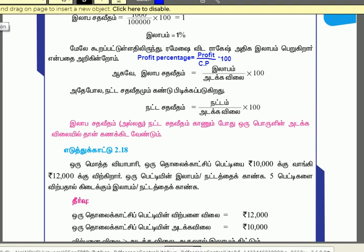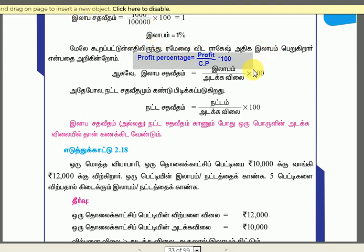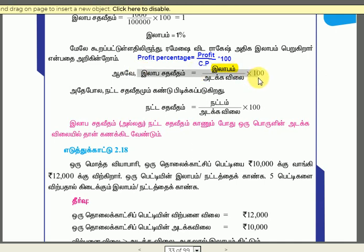Let's talk about profit percentage. How is profit percentage calculated? Profit percentage is profit divided by cost price into 100. And loss percentage is loss divided by cost price into 100.